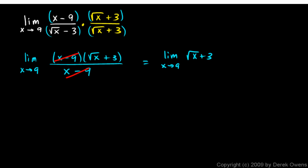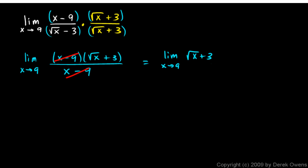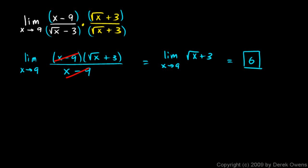And that we can do. This is just the square root of 9, which is 3, plus 3. So 3 plus 3 is 6. And that's our answer. Again, the trick here was using the conjugate to simplify the radical expression.